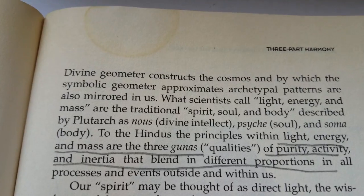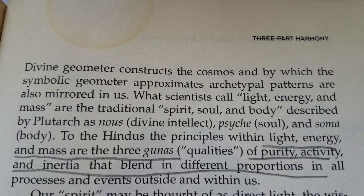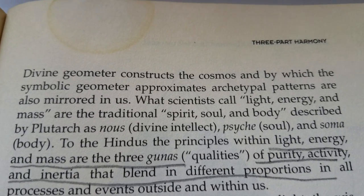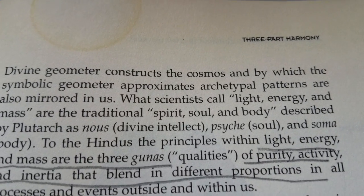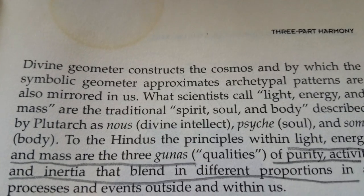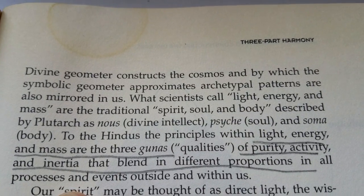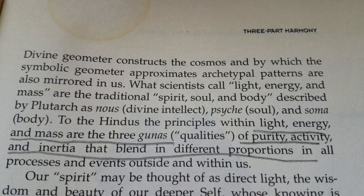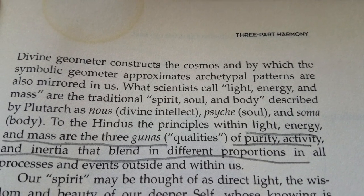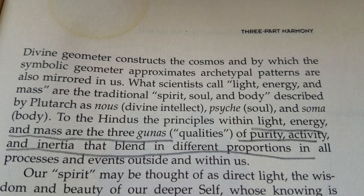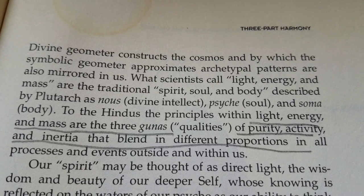All right. Here's a little snippet. The divine geometry constructs the cosmos, and by which the symbolic geometry approximates archetypal patterns are also mirrored in us. What scientists call light, energy, and mass are the traditional spirit, soul, and body, described by Plutarch as nous, divine intellect, psyche, or soul, and soma, body. To the Hindus, the principles within light, energy, and mass are the three gunas, or qualities of purity, activity, and inertia. That blend in different proportions in all processes and events outside and within us.